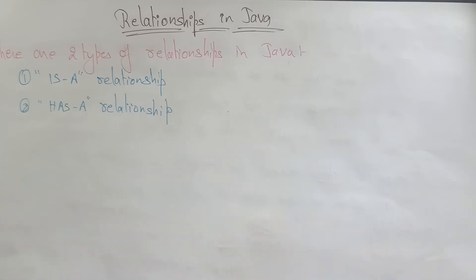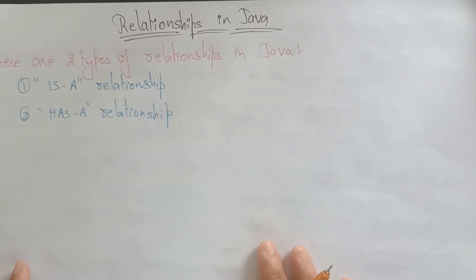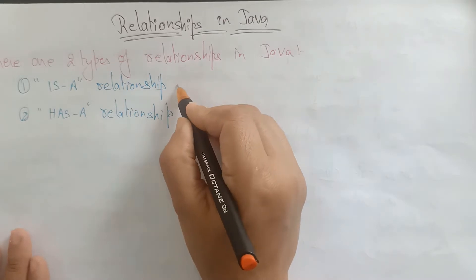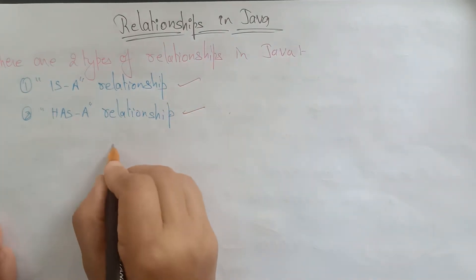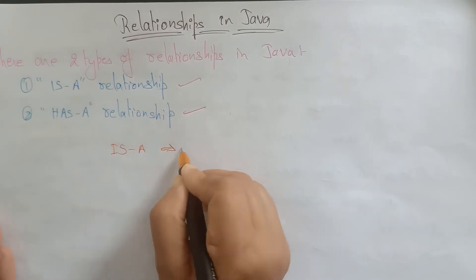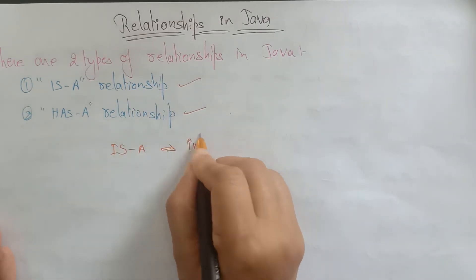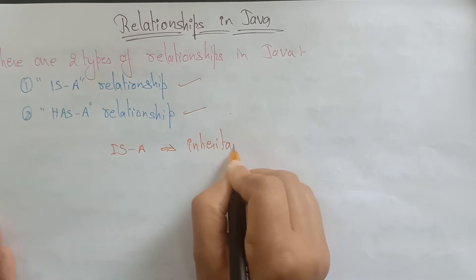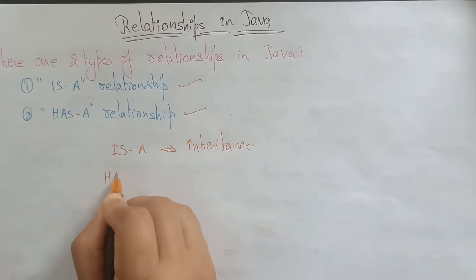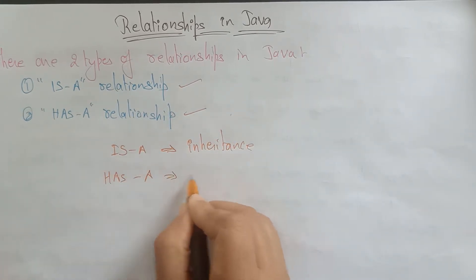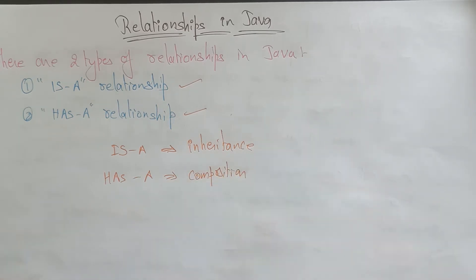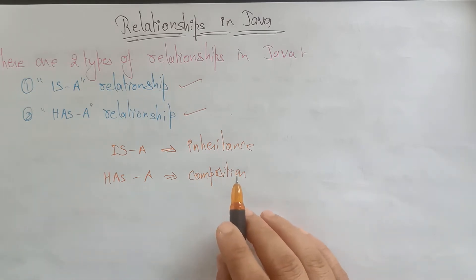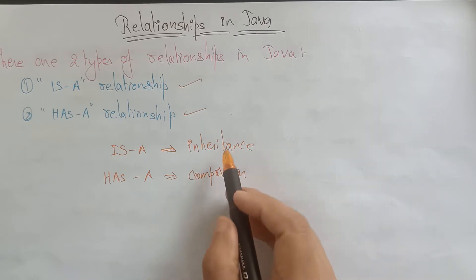Welcome back. There are two types of relationships in Java: one is the 'is-a' relationship and the other is the 'has-a' relationship. The 'is-a' relationship refers to inheritance, whereas the 'has-a' relationship refers to composition.